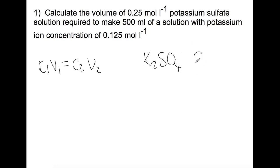First thing you need to do is write down what the formula is for potassium sulfate. So within 0.25 moles per liter of potassium sulfate, you have a different number of ions. So you have 0.25 moles of K2SO4 within your liter.